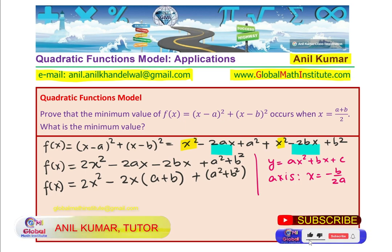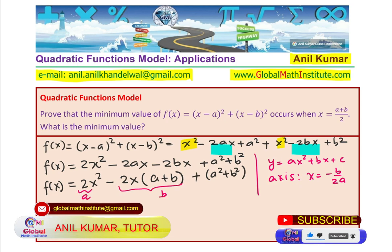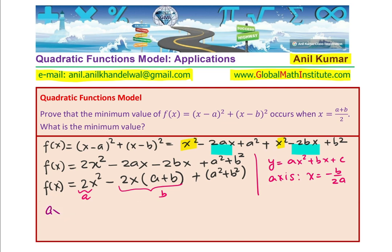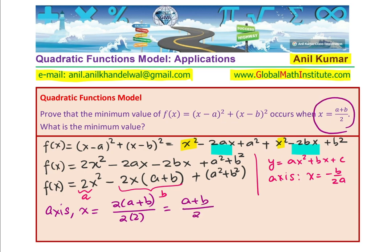Here we also have a standard form where the coefficient of x is -2(a + b) and the leading coefficient is 2. So we can write down the axis: x = -(-2(a + b)) / (2 × 2) = (a + b) / 2. So we have shown that the axis is indeed the average value of a and b. That part has been done.